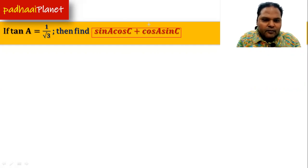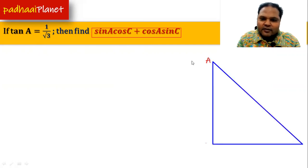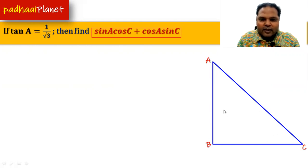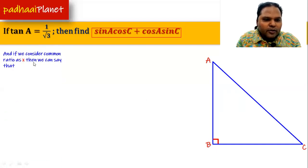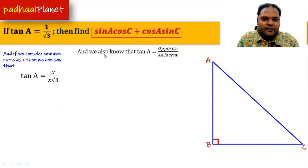As I've been doing in previous videos, we first focus on tan(A) = 1/√3, and with the help of this we'll find out the values of sin(A) and cos(C). It's a ratio, so let's understand the triangle ABC where angle B is the right angle. For tan(A), let's assume the common ratio is x, so tan(A) = x over x√3. In trigonometry, tan(A) = opposite over adjacent.